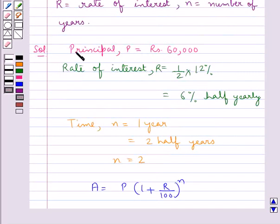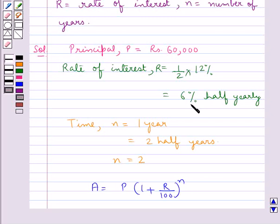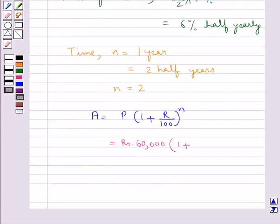Now, the principal P is Rs. 60,000. So, this is equal to Rs. 60,000 multiplied by 1 plus, now the rate of interest R is 6%. So, 6 upon 100 whole to the power n, that is 2.